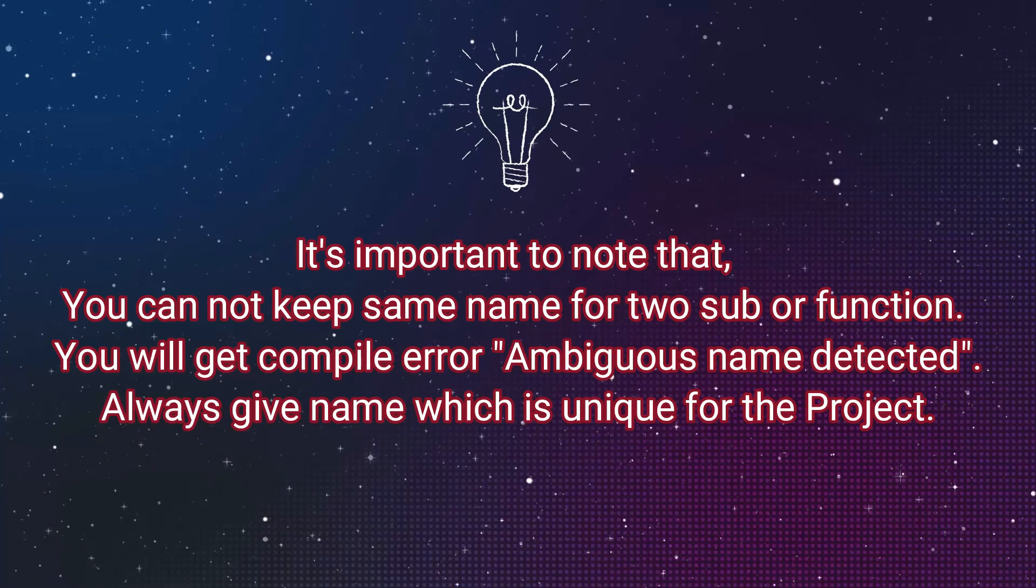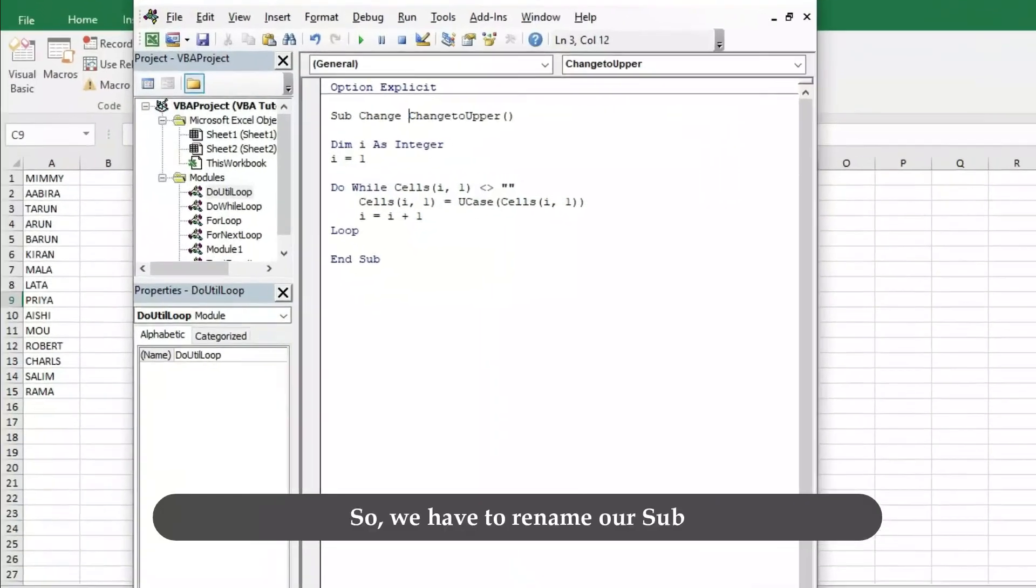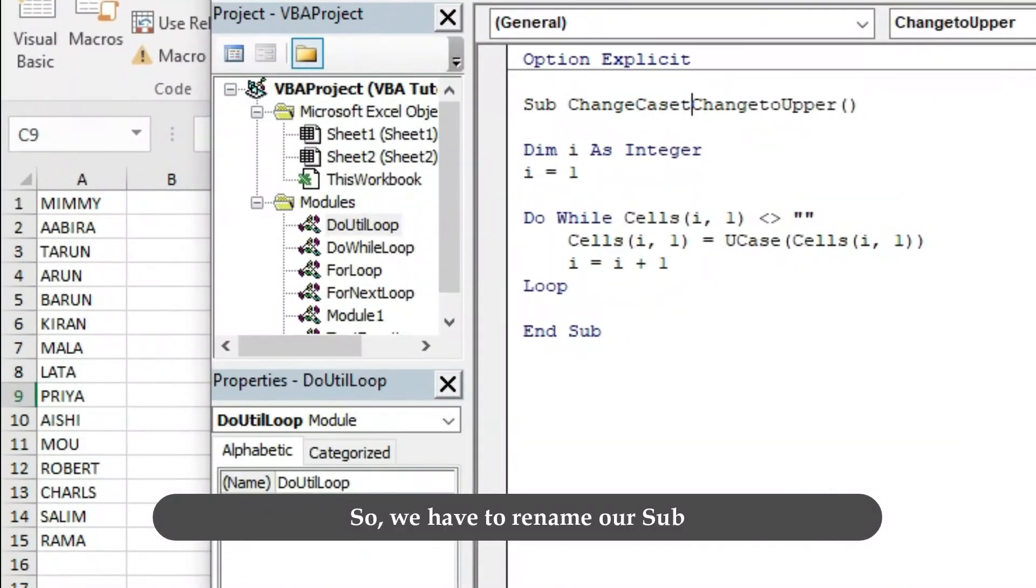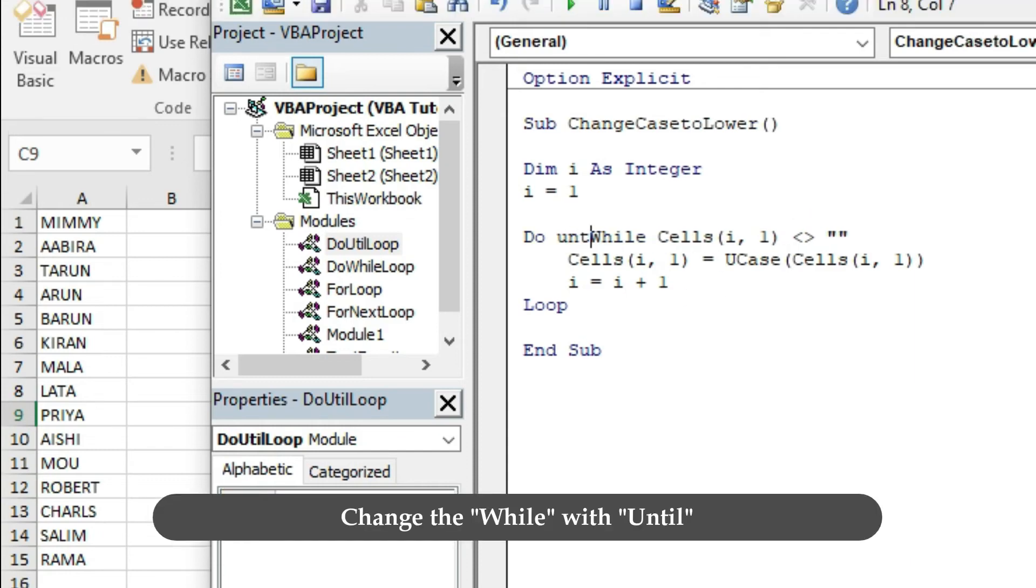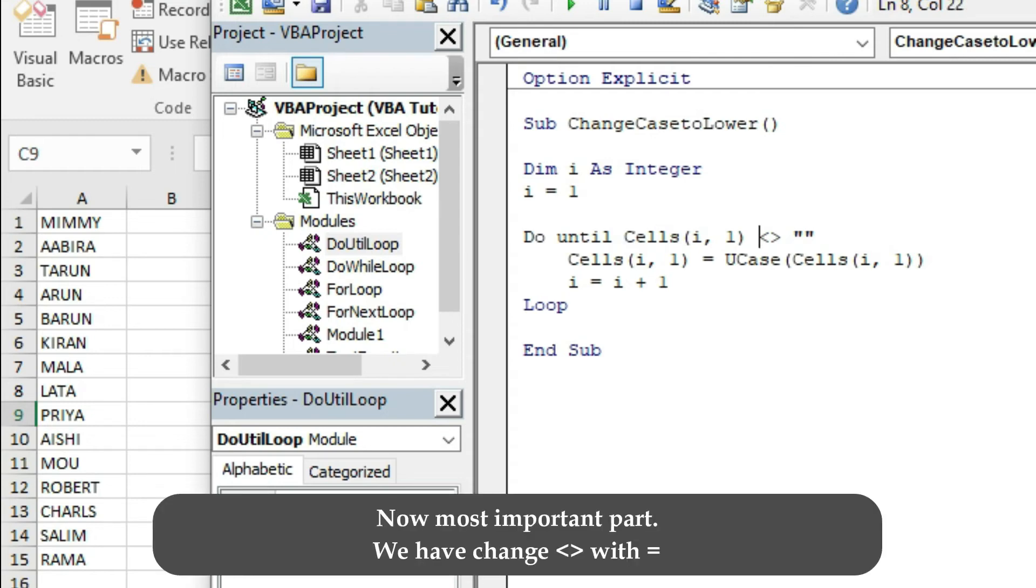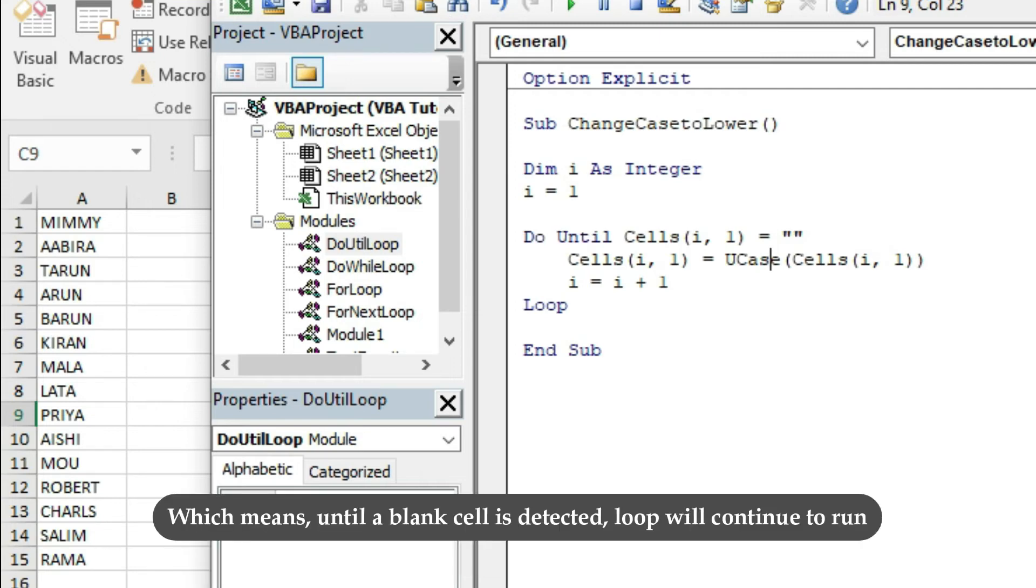It's important to note that you cannot keep the same name for two sub or function. You will get compile error ambiguous name detected. Always give a name which is unique for the project. So we have to rename our sub. Change the While with Until. Now most important part: we have to change the not equal to symbol with equal to, which means until a blank cell detected, loop will continue to run.